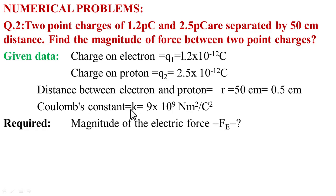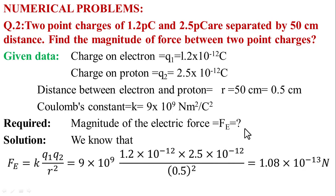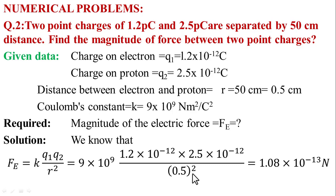To find the magnitude of electric force Fe, we use Coulomb's law. Putting in the values: K equals 9 multiplied by 10 raised to power 9, multiplied by 1.2 multiplied by 10 raised to power minus 12, multiplied by 2.5 multiplied by 10 raised to power minus 12, divided by 0.5 squared. Calculating, Fe equals 1.08 multiplied by 10 raised to power minus 13 Newton.